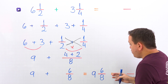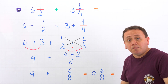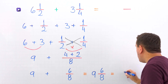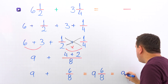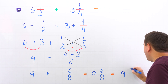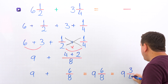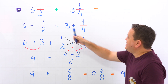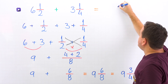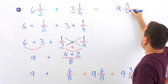So finally, we are going to simplify 6 eighths by dividing the numerator and the denominator by 2. We cannot simplify the whole number, so we put 9 one more time. And then, 6 divided by 2 gives us 3, and 8 divided by 2 gives us 4. That's it — 6 and 1 half plus 3 and 1 fourth gives us 9 and 3 fourths.